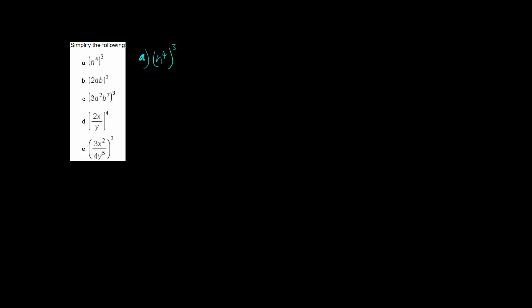In this video I'm going to look at simplifying the following expressions. Let's have a look at the first one. Part a is n to the 4 raised to the power of 3. This is the fourth index law — if you have a power raised to a power, you multiply the powers. So this means we have n to the 4 times 3, which is n to the twelfth.